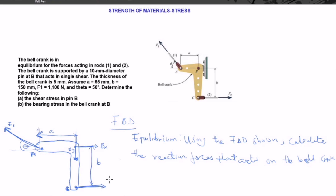We have F2 here. The bell crank is supported by a 10 millimeter diameter pin at B, which acts as a single shear. The thickness of the bell crank is 5 millimeters. The dimension a is 65 millimeters and b is 150 millimeters. F1 is 1001 newtons and theta is 50 degrees.